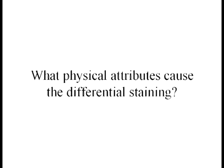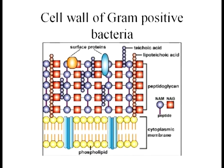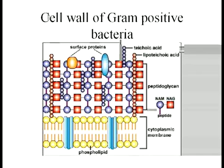What physical attributes cause the differential staining in these bacteria? It mostly has to do with the structure of the cell wall. In gram-positive bacteria, the main thing to focus on is the thick layer of peptidoglycan, illustrated by these red square purple circle complexes — five layers deep. The other part of the cell wall of a gram-positive bacteria is the cytoplasmic membrane, which is composed of a phospholipid bilayer.